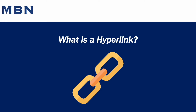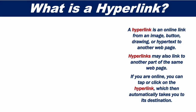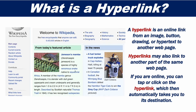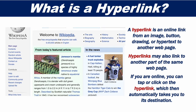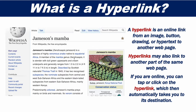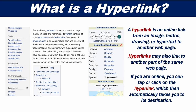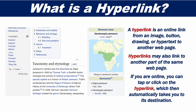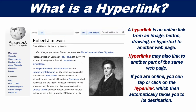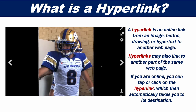What is a hyperlink? A hyperlink is an online link from an image, button, drawing, or hypertext to another webpage. Hyperlinks may also link to another part of the same webpage. If you are online, you can tap or click on the hyperlink, which then automatically takes you to its destination.